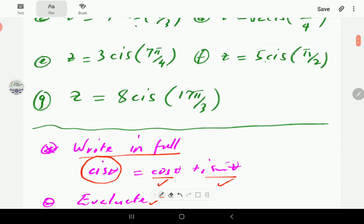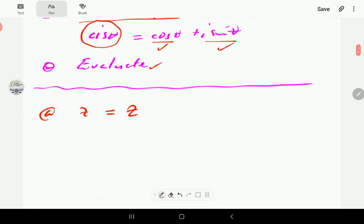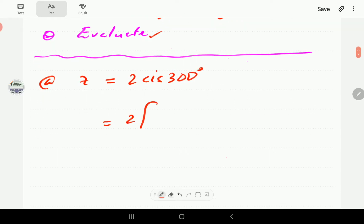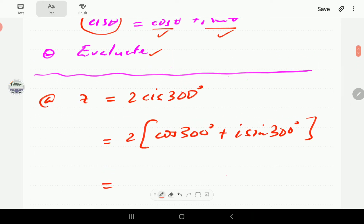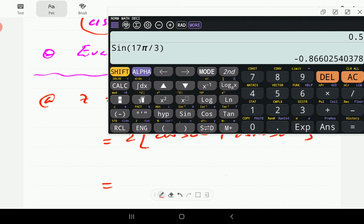So for (a), we have two times cis 300 degrees. I'm going to write this out in full: cosine 300 plus i sine 300 degrees. 300 degrees is a special angle, but we're going to punch this in the calculator just in case some of us are not up to speed with the values of the special angle degrees.